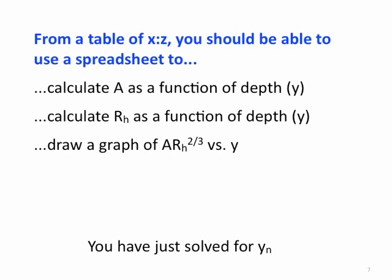Now, the reason for doing that is once you've got this graph of A, R sub H to the 2/3 versus Y, you can find Y where QN over S0 to the 1/2 is equal to area times hydraulic radius to the 2/3.